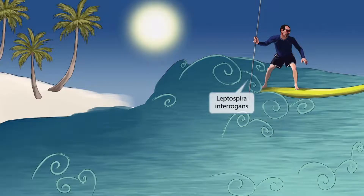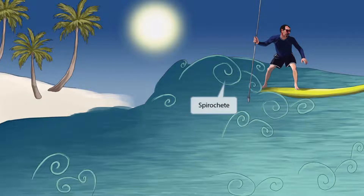This scene takes place in the tropics near the beach with a guy surfing. Notice that he's holding a spear in one hand as if he's hunting something. Spear sounds like Leptospira, so we've shown this guy holding a spear to help you remember that this image is all about Leptospira interrogans. If you look closely at the waves, you can see that they resemble a spiral, and this is here to help you remember that this organism is a spirochete.